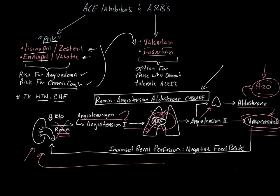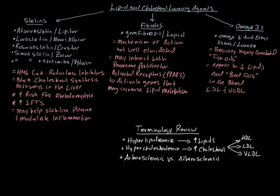ACE inhibitors may be a better option than beta blockers in certain patients because they lower blood pressure without impacting heart rate—important for active patients who need a normal tachycardic response. They focus on reducing excess fluid and blood pressure without the chronotropic effects of beta blockers or calcium channel blockers. ACE inhibitors may be protective for the kidneys from hypertension effects in patients with renal insufficiency, though they are contraindicated with renal artery stenosis.